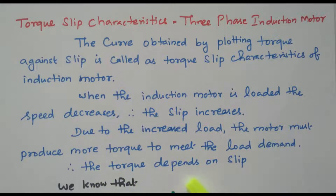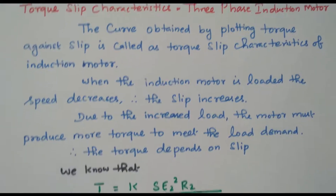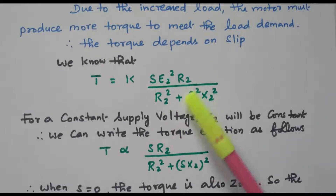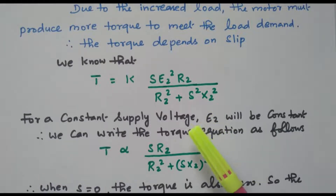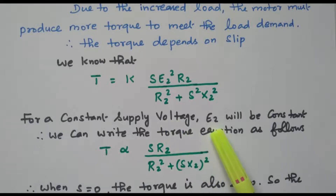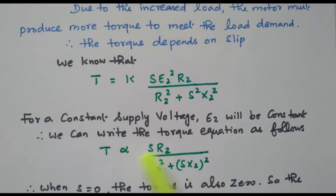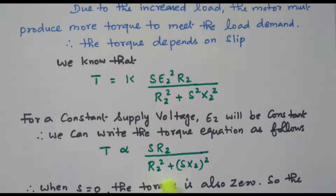It is clear that torque depends upon the slip. The expression for torque is: T = K · S · E2² · R2 / (R2² + S²X2²). For a constant supply voltage, E2 will be constant, so we can write the torque equation as T is directly proportional to S·R2 / (R2² + S²X2²). This depends upon R2, X2, and slip.